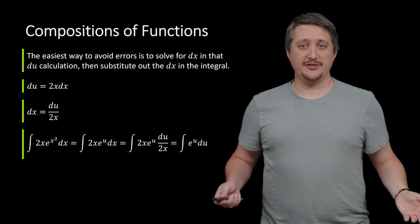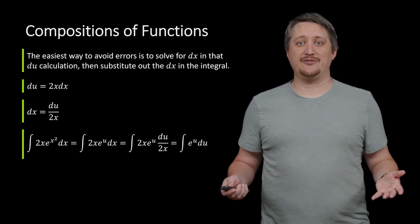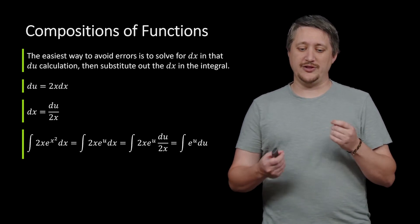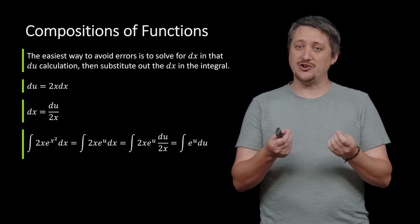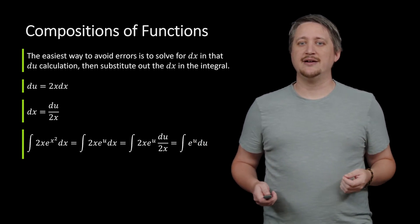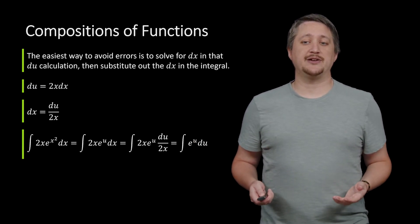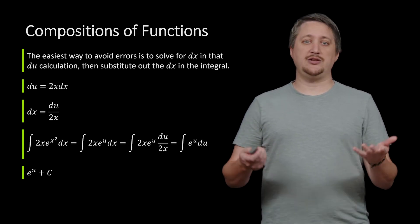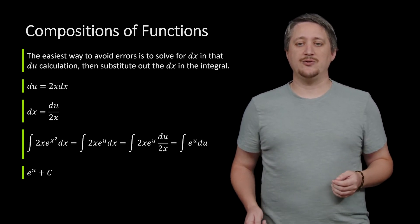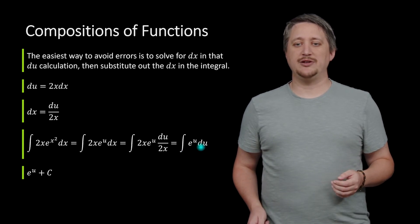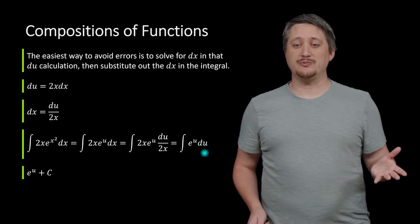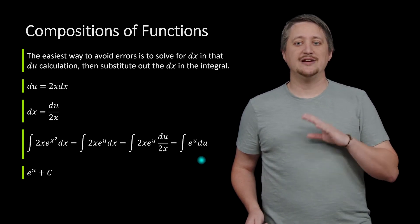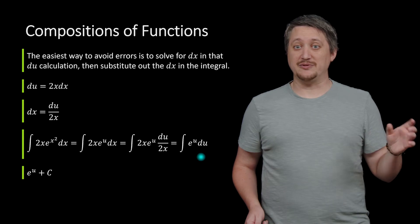But the good news is that now everything's a u. There's no x's left. The process of subbing out that du and changing the dx got rid of the other x that was already there. So now I can integrate this with respect to u because that's what the du means. And that gets me just e to the u plus c. This is saying you have e to something, but it's just a u and you're doing it with respect to u. So I don't care if u is representing something else. That's the only antiderivative that I care about.